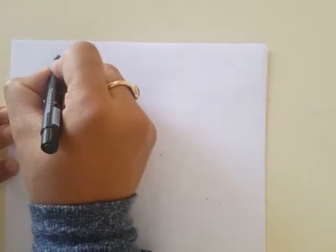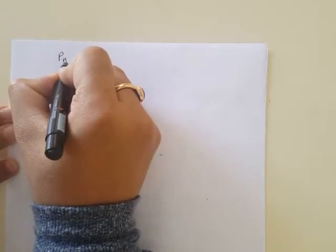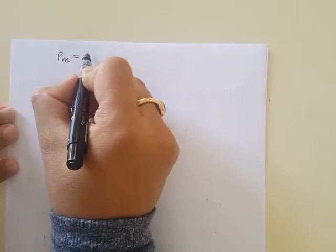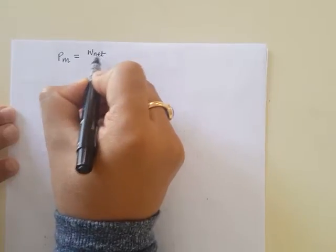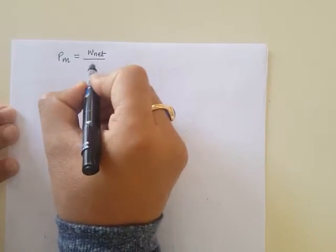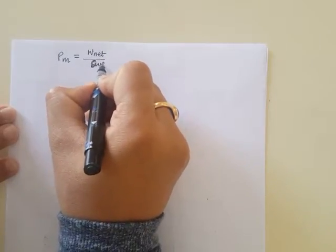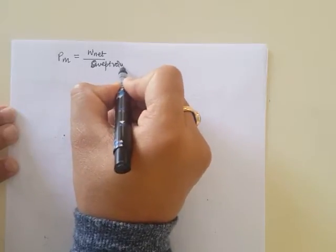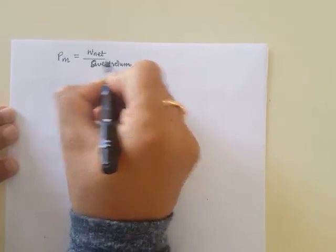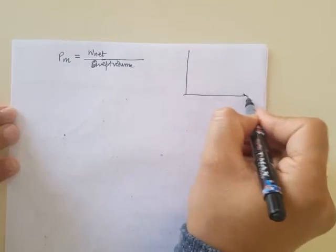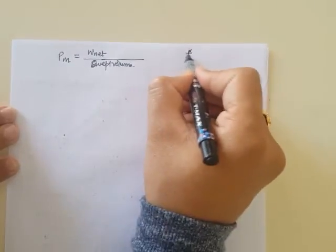With respect to the Otto cycle, people are also interested in knowing the mean effective pressure. The mean effective pressure, represented by Pm, is defined as the net work output from the Otto cycle divided by the swept volume. If we plot the Otto cycle on a PV diagram with points 1, 2, 3, and 4...